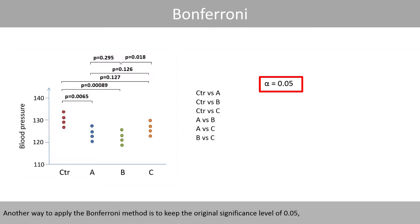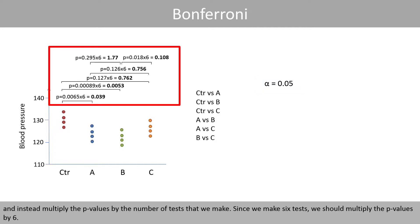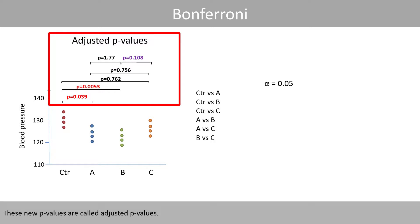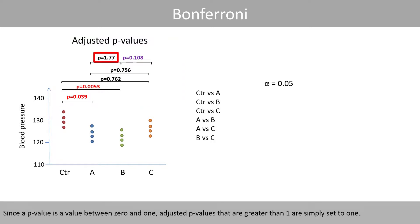Another way to apply the Bonferroni method is to keep the original significance level of 0.05 and instead multiply the p-values by the number of tests that we make. Since we make six tests, we should multiply the p-values by six. These new p-values are called adjusted p-values. Since a p-value is a value between 0 and 1, adjusted p-values that are greater than 1 are simply set to 1.